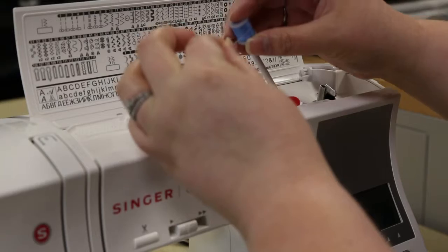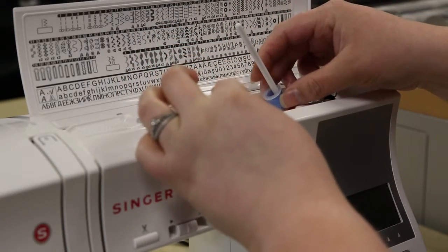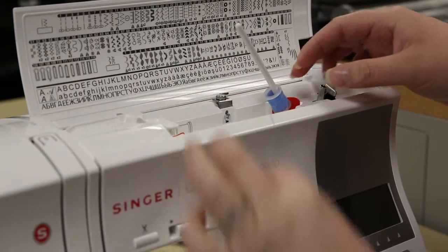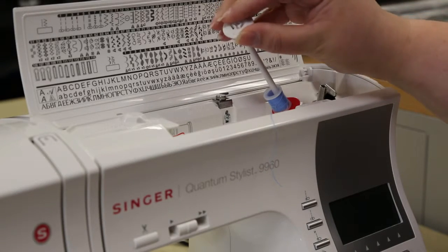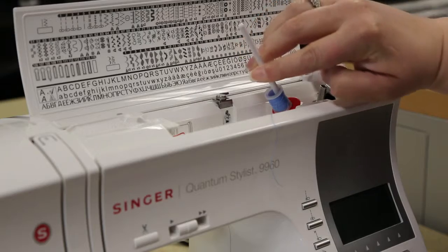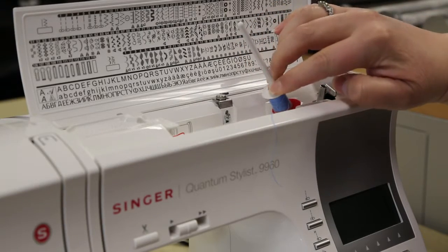To thread the machine, start with the spool pin. Pull up the left end and set the spool of thread on the pin so that the thread unrolls from the front of the spool. Next, set the correct size of spool cap on the spool pin and secure it on top of the spool.